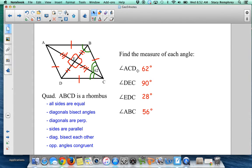So angle ACD is 62. I know that because these two angles are equal to each other because the diagonal bisects the angles. Angle DEC is 90 degrees because the diagonals are perpendicular.